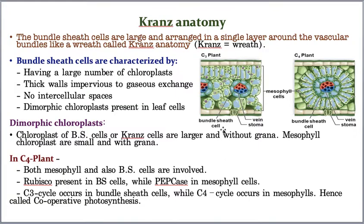Kranz anatomy is defined by the bundle sheath cells becoming large and arranging themselves in a single layer around the vascular tissue in a wreath-like pattern. The word 'Kranz' means wreath — a series or circular arrangement. In this anatomy, the bundle sheath cells also contain chloroplasts.